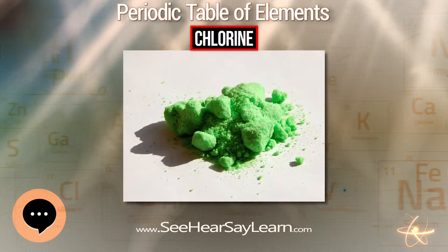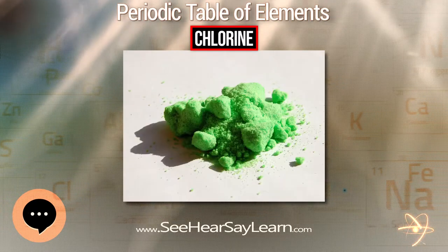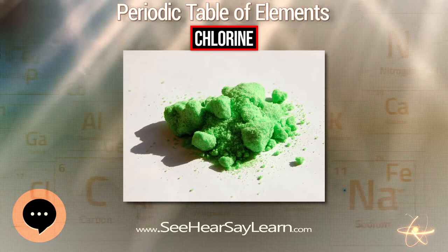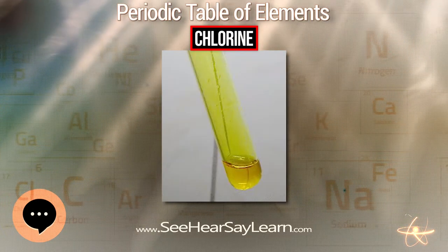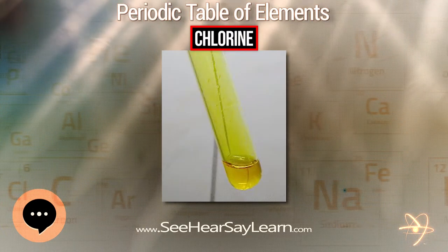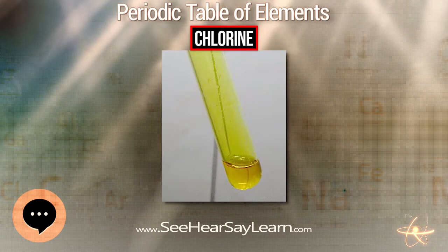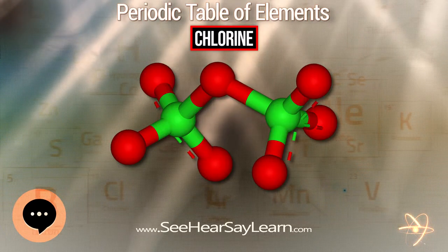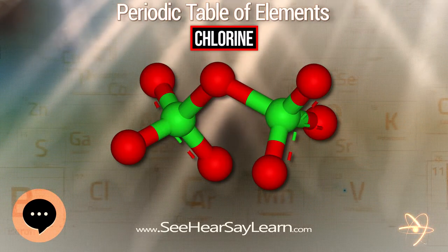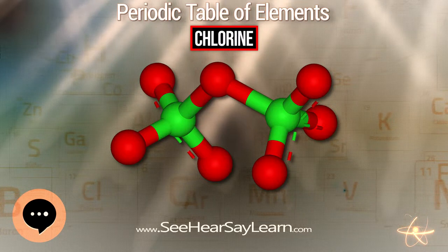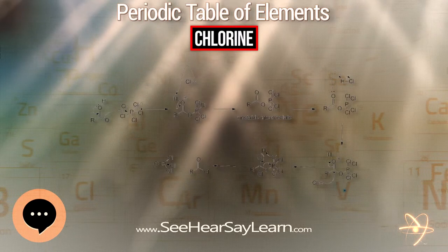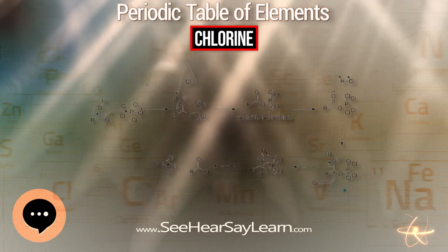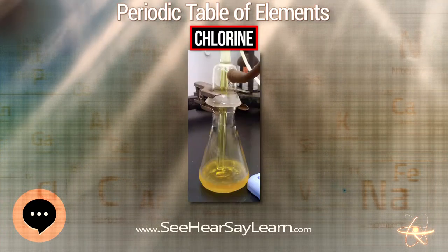In the top meter of the lithosphere, ³⁶Cl is generated primarily by thermal neutron activation of ³⁵Cl and spallation of ³⁹K and ⁴⁰Ca. In the subsurface environment, muon capture by ⁴⁰Ca becomes more important as a way to generate ³⁶Cl. Chlorine is intermediate in reactivity between fluorine and bromine and is one of the most reactive elements. Chlorine is a weaker oxidizing agent than fluorine but a stronger one than bromine or iodine.